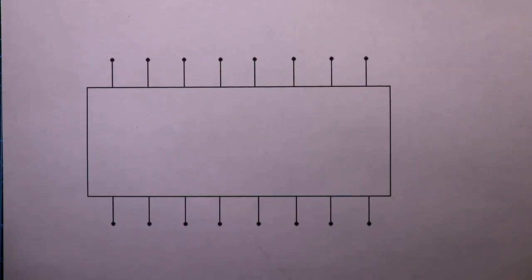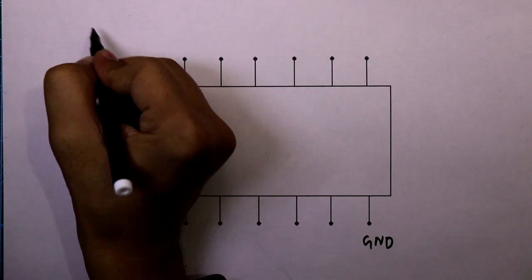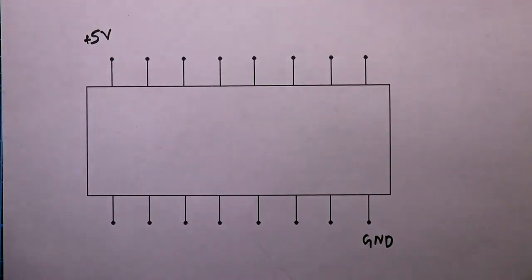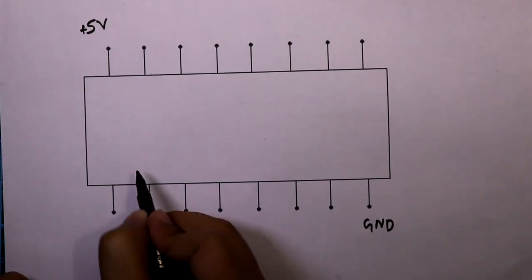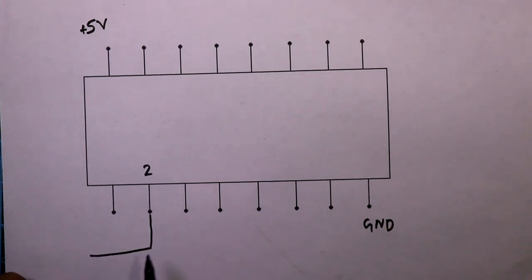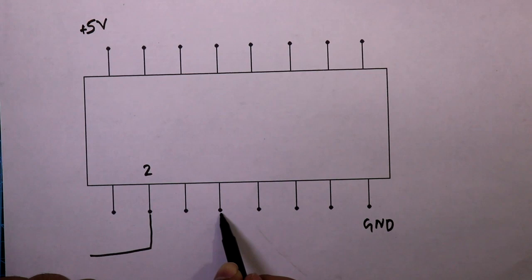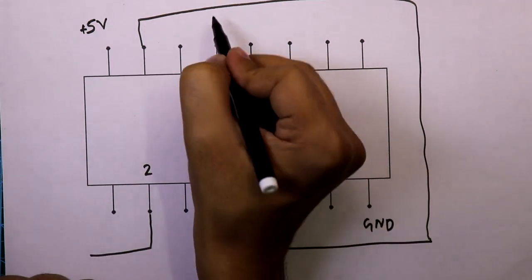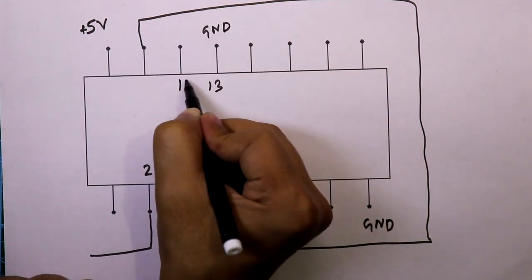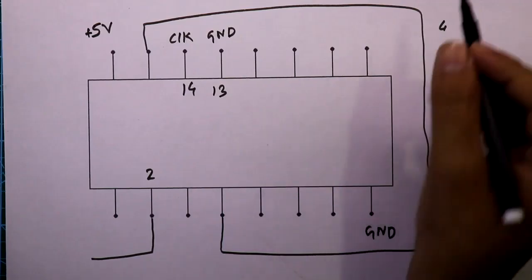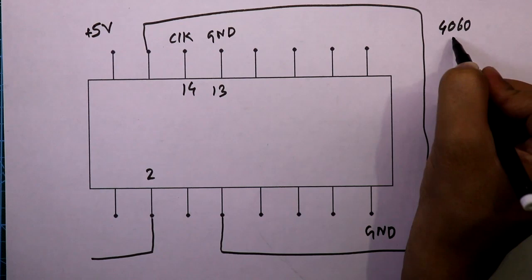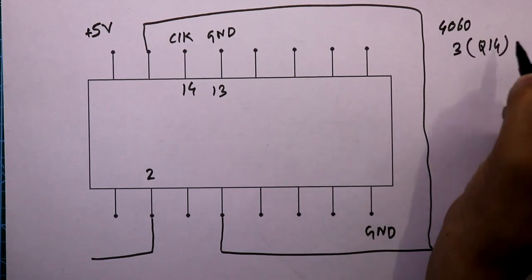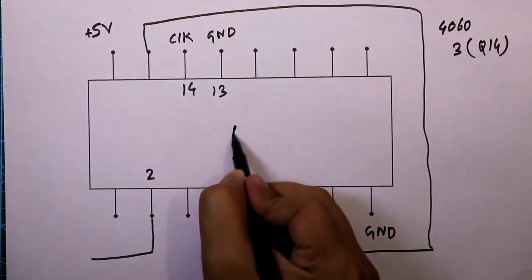Let me show how to do this. For IC 4017, pin 8 is ground and pin 16 is +5V. Take output from pin 2, connect pin 4 to pin 15, connect pin 13 to ground, and pin 14 is the clock input. The Q14 output (pin 3) from IC 4060 connects to pin 14 of IC 4017. Then take output from pin 2.